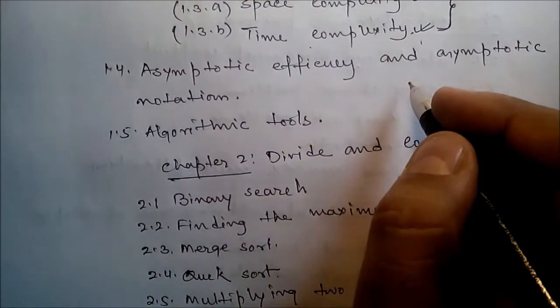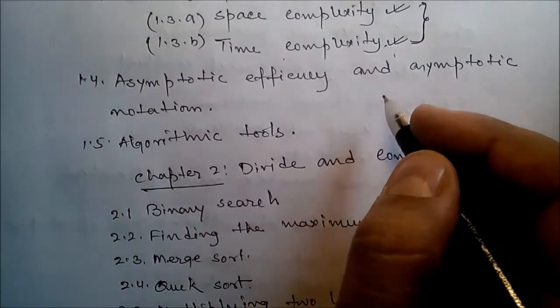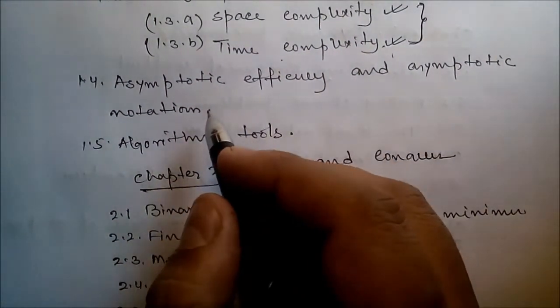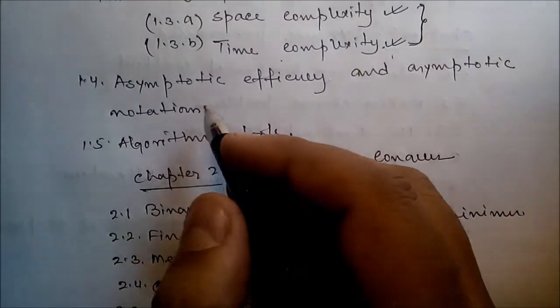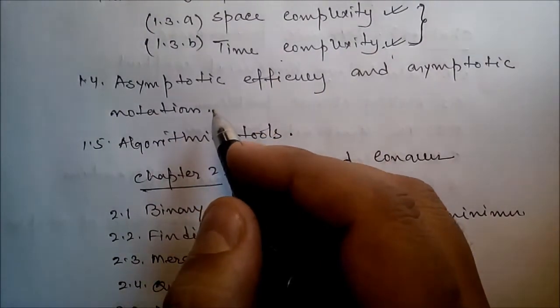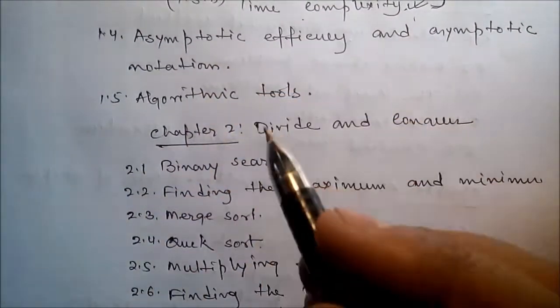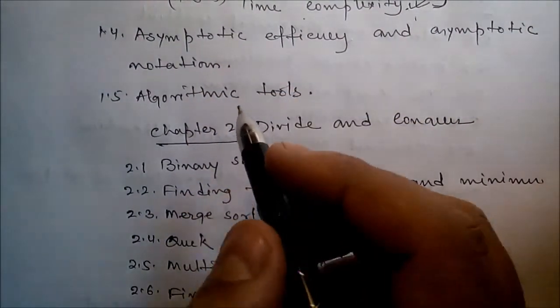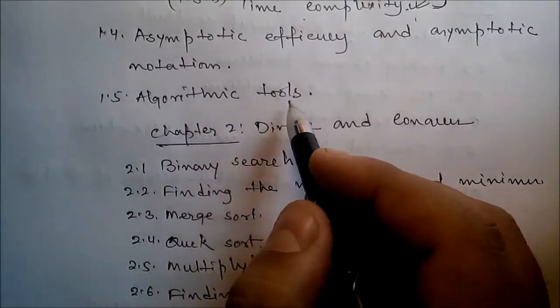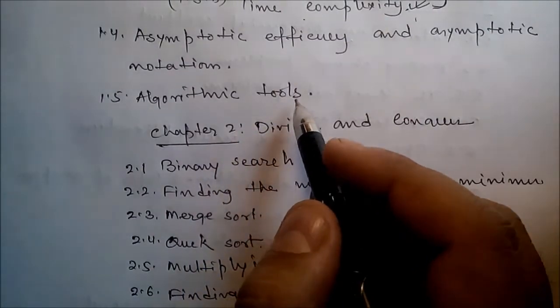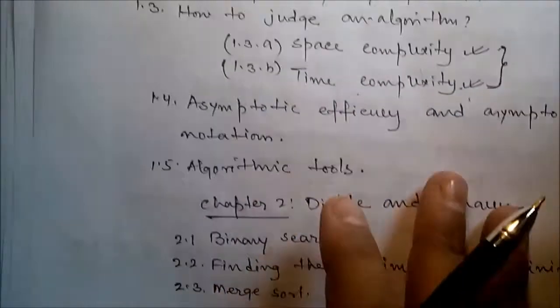Next we'll talk about asymptotic efficiency and asymptotic notations, the use of asymptotic efficiency and asymptotic notations, and then we'll talk about algorithmic tools. These are the topics for Chapter 1.